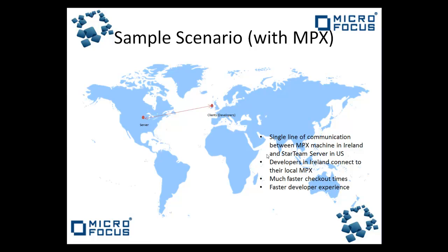After introducing MPX, you can see a single lane of bi-directional traffic between the US and Ireland. The Star Team server updates a remote cache agent located in the Ireland office with all changes to server data. This cache agent is then accessed locally by developers in Ireland, negating the need for separate long-distance communication for each developer and each server operation. The end result is greatly improved response time and efficiency for the Ireland development office.